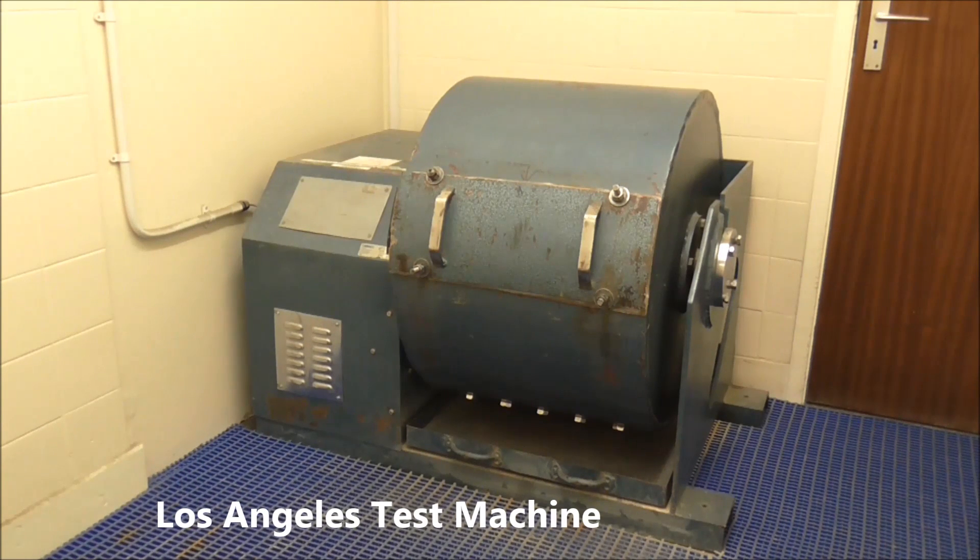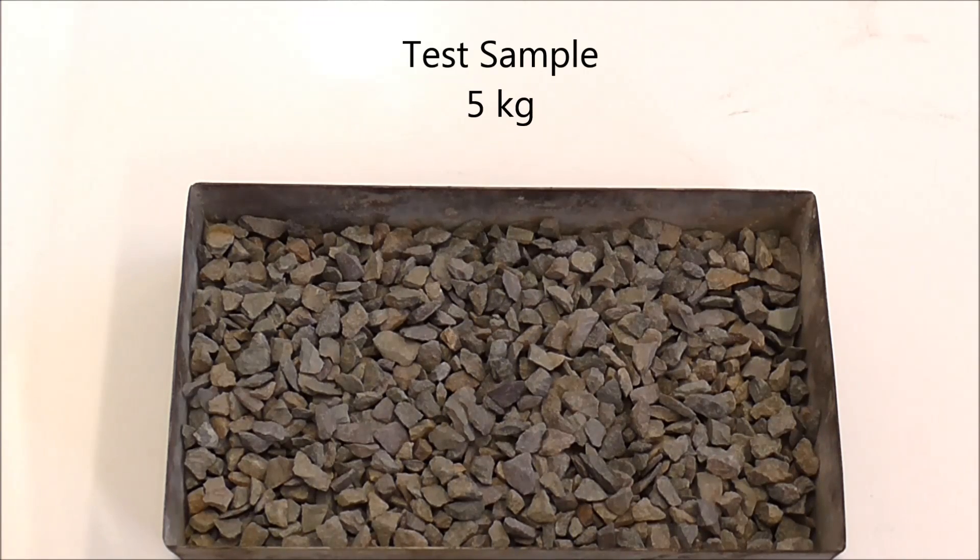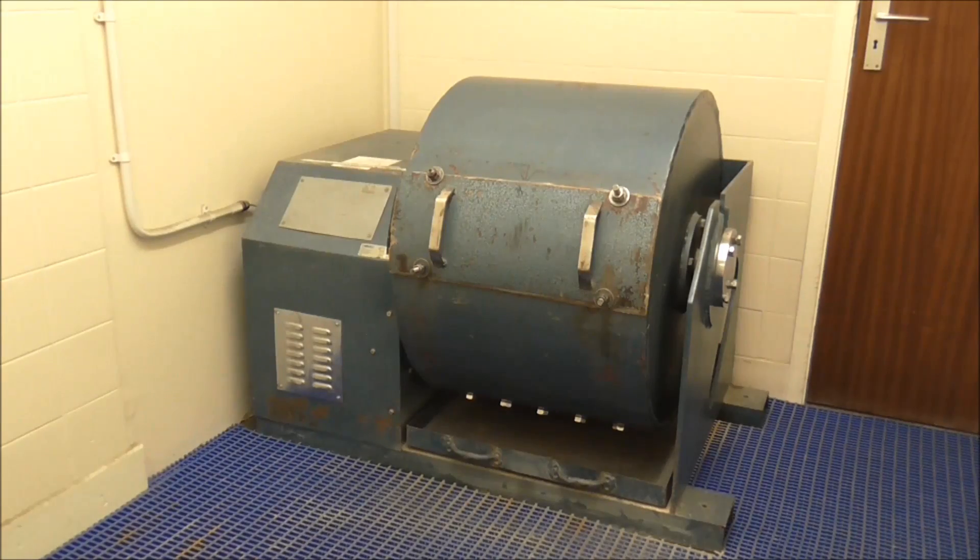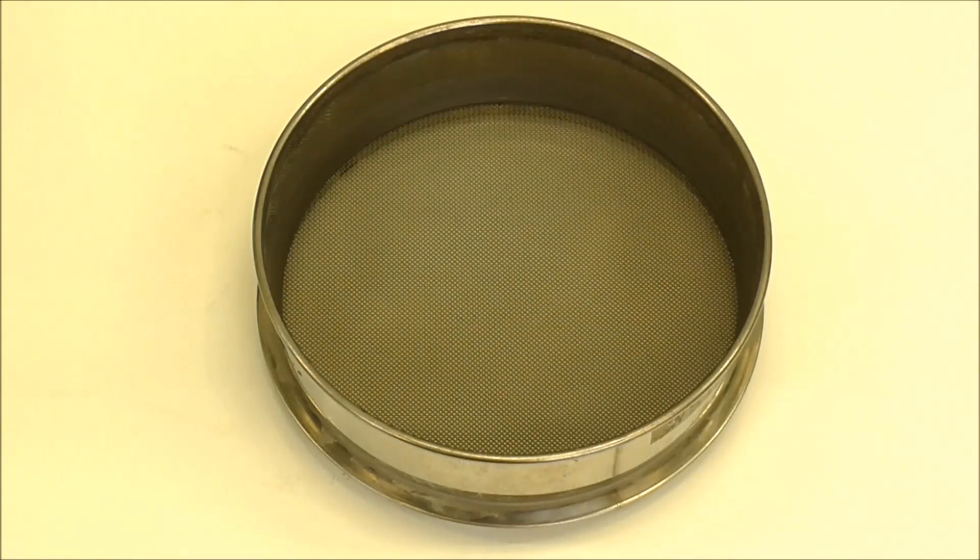The principle of the test is quite simple. A 5kg sample of 10-14mm sized aggregate is placed in a rotating drum along with 11 steel balls. The drum is then set to rotate for 500 revolutions, after which the degree of degradation is measured by using a 1.6mm sieve.